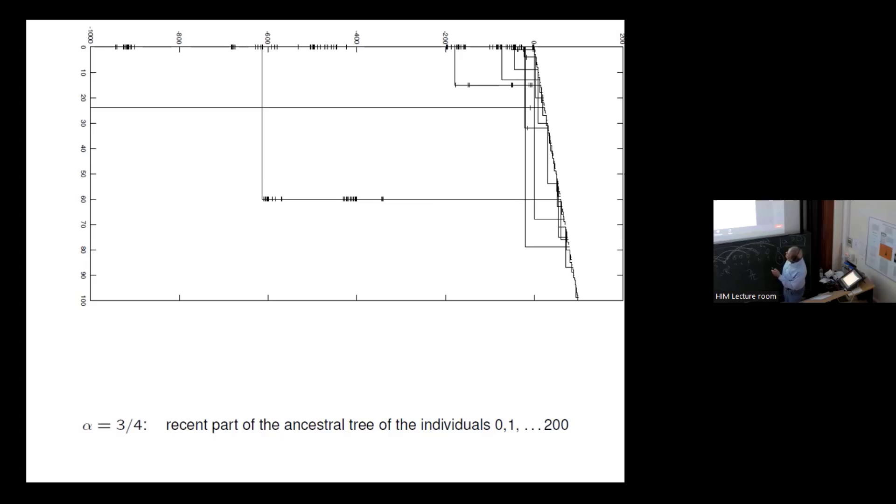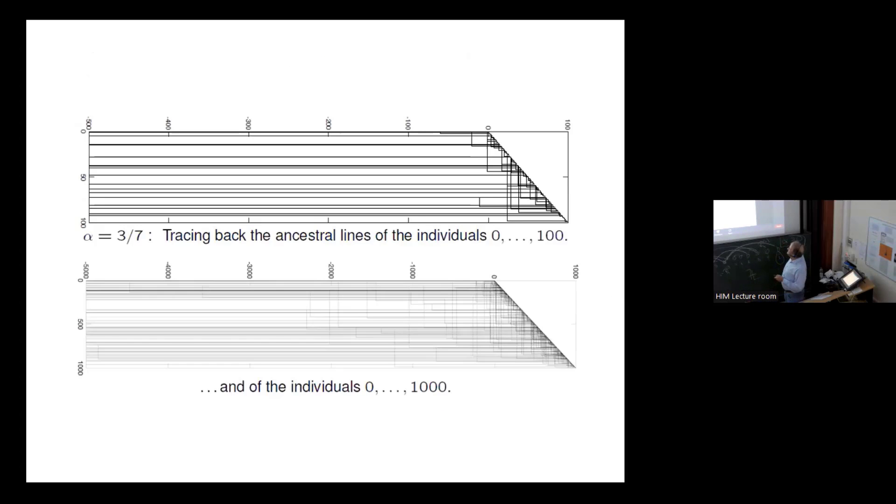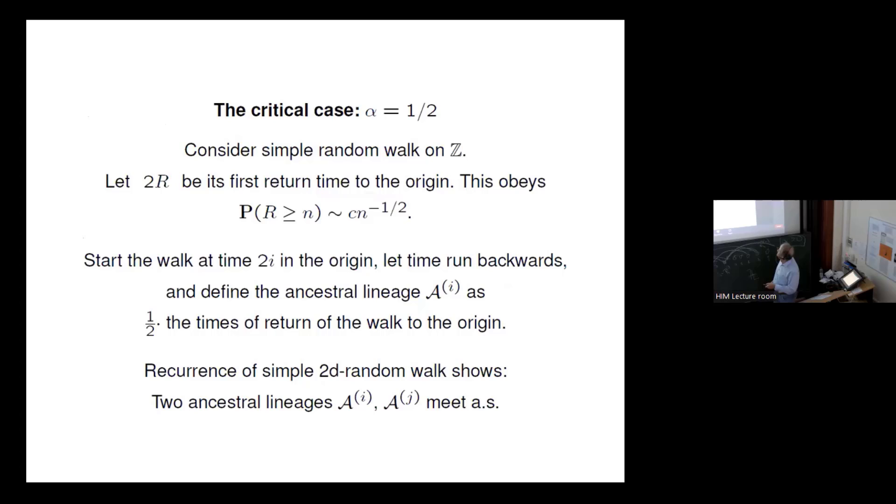And this was the recent part of the tree which we had here. Not all had coalesced already, but this is the ancient part, and here you'll see at minus 2,800, all have found their common ancestor. And these are for alpha equals three over seven, the genealogies of the individuals between zero and 100. Here, back to minus 500, and you'll see many of them have not yet found their common ancestor. And with 1,000, it looks even more gray here.